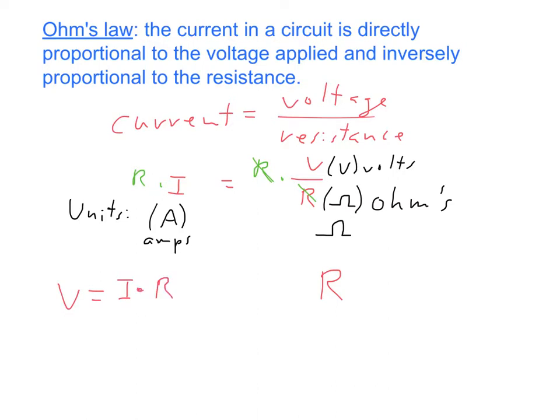And we could do another algebra step on this form. If we want to put it into R form to get resistance by itself, just divide both sides by I. I's cancel, and now we have R equals V over I. So you should be completely comfortable at this stage being able to convert between these three forms.